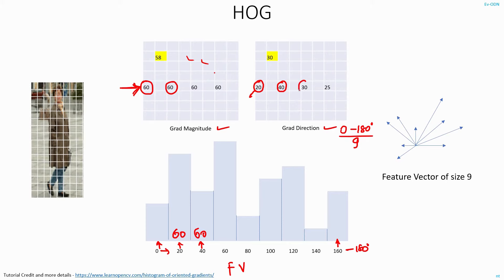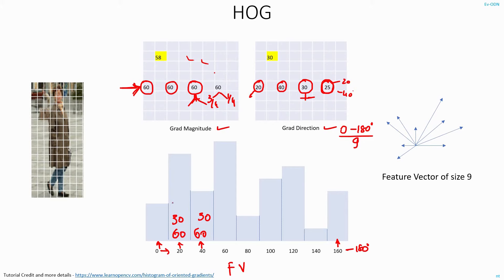In the third example, the gradient direction is 30 — right in between 20 and 40. So what I will do is take the gradient magnitude, divide by half, and put 30 in the 20 degree bin and 30 in the 40 degree bin. Basically I am dividing this value by half and splitting them equally between the 20 and 40 degree bins. Now what if the gradient direction is 25? In this case I have to divide it into 3/4 and 1/4, because 25 degrees is closer to the 20 degree bin than the 40 degree bin. So I will put 45 here and 15 here — the magnitude 60 is divided into 45 and 15.